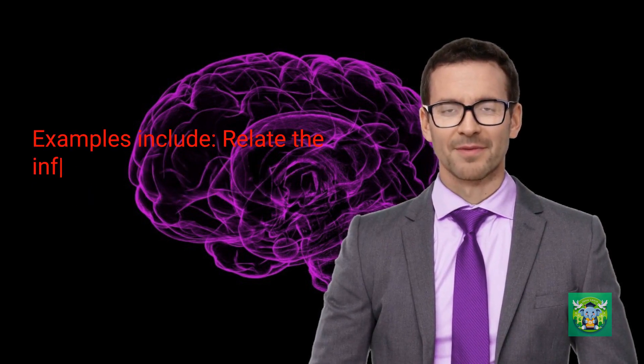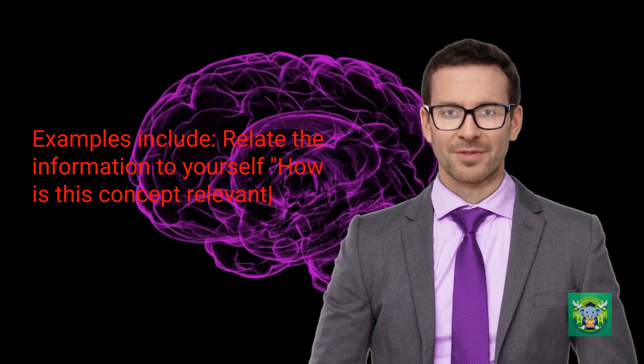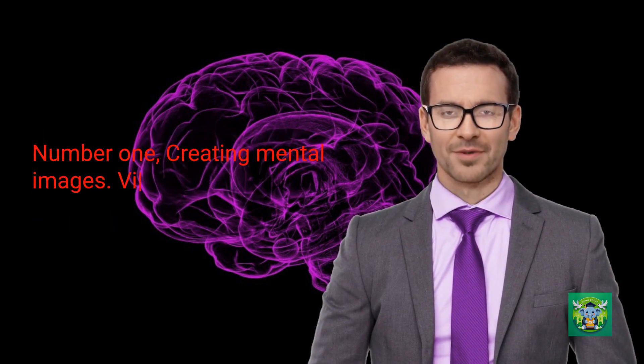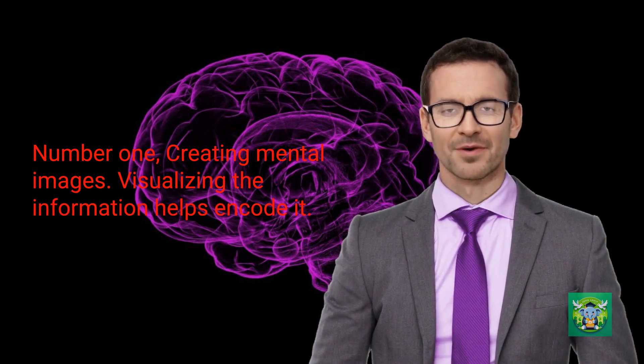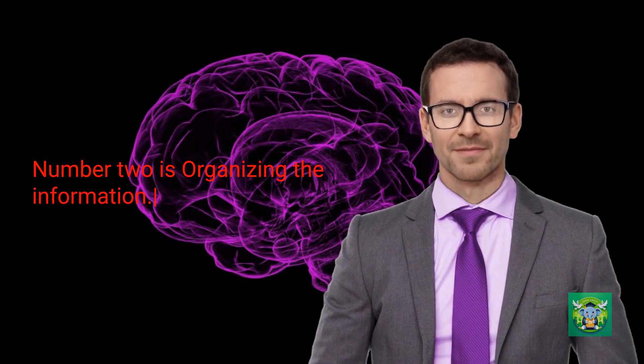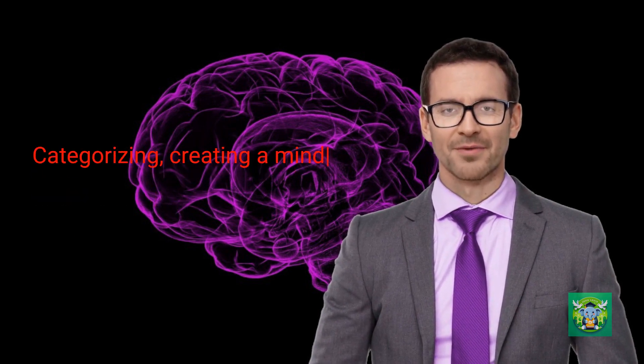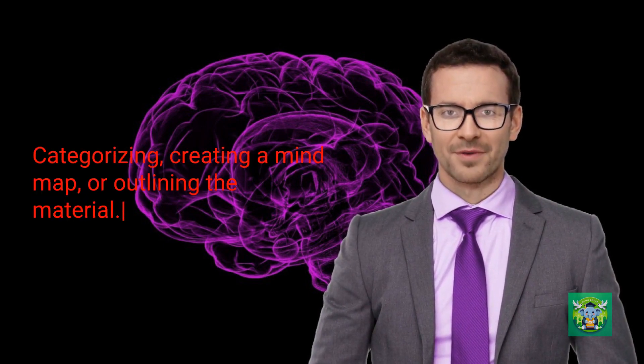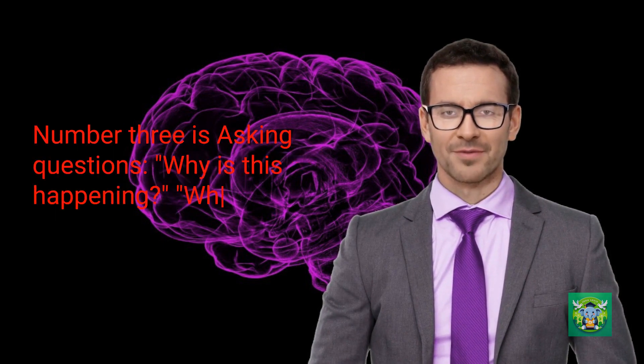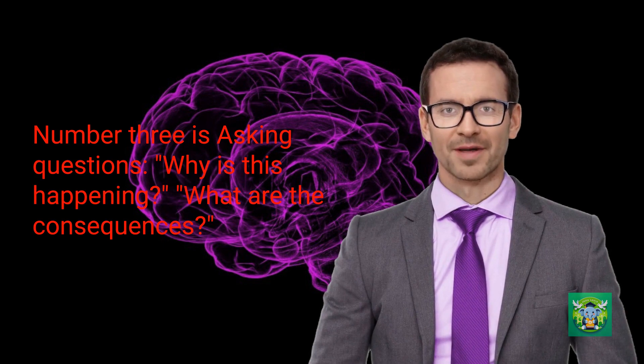Examples include: relate the information to yourself—how is this concept relevant to my life? Number one, creating mental images. Visualizing the information helps encode it. Number two is organizing the information—categorizing, creating a mind map, or outlining the material. Number three is asking questions: why is this happening? What are the consequences?